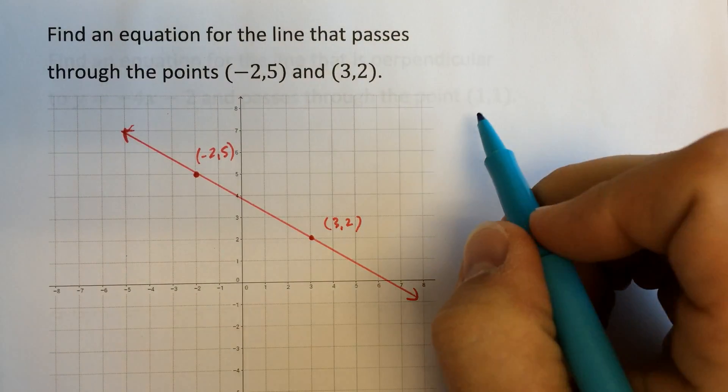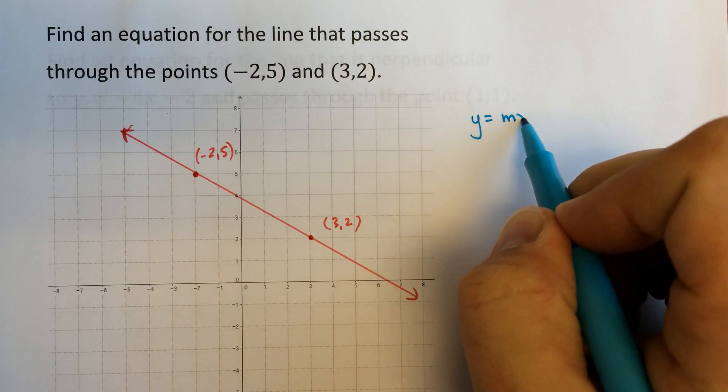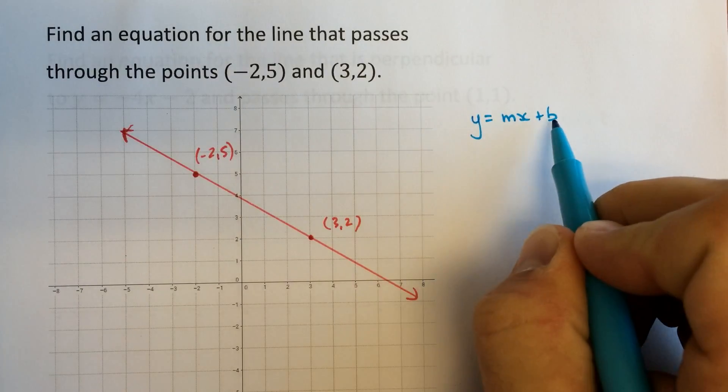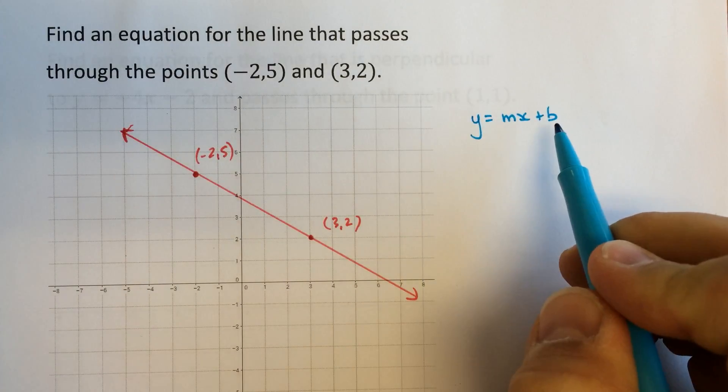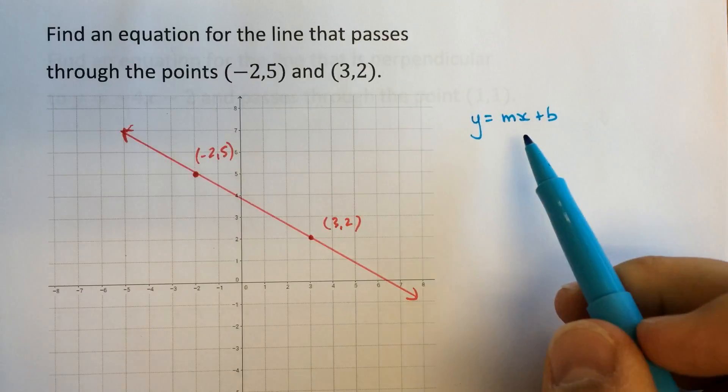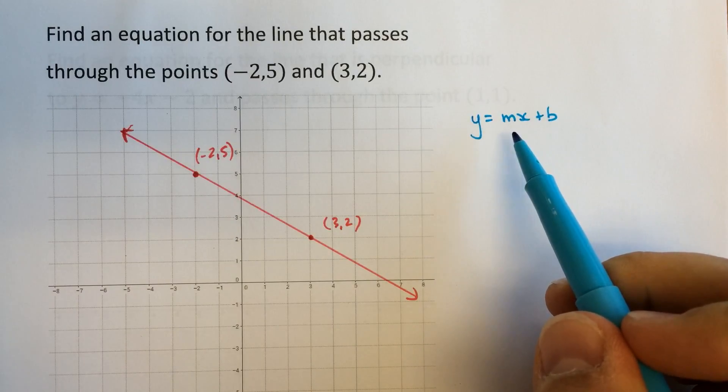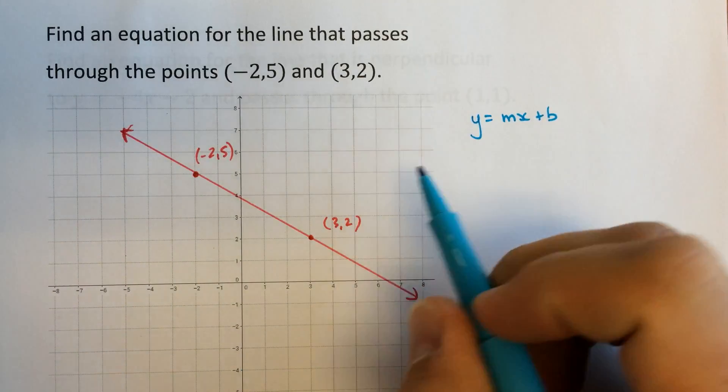Well, often we'll write an equation in this form, y equals mx plus b. That's the slope y-intercept form. m is the slope, b is the y-intercept. Let's start by figuring out what the slope must be. We can use these two points to figure that out.